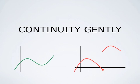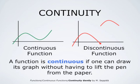This picture shows the graph of a function which is continuous — that is the green graph — and the graph of a function which is discontinuous — that's the red graph. The easiest way to define continuity is to say that a function is continuous if one can draw its graph without having to lift the pen from the paper.